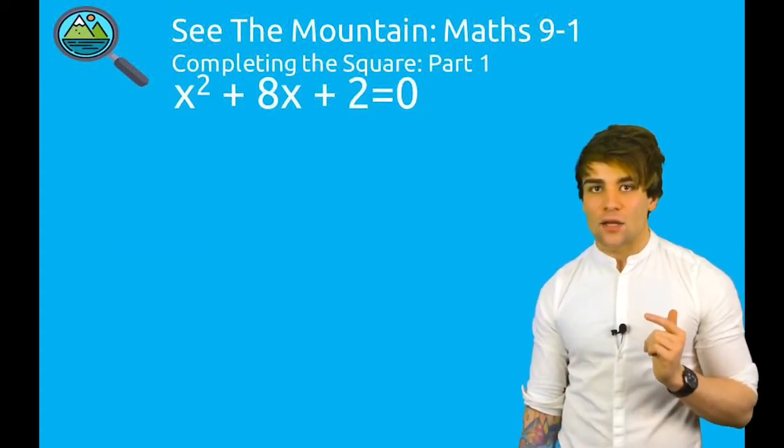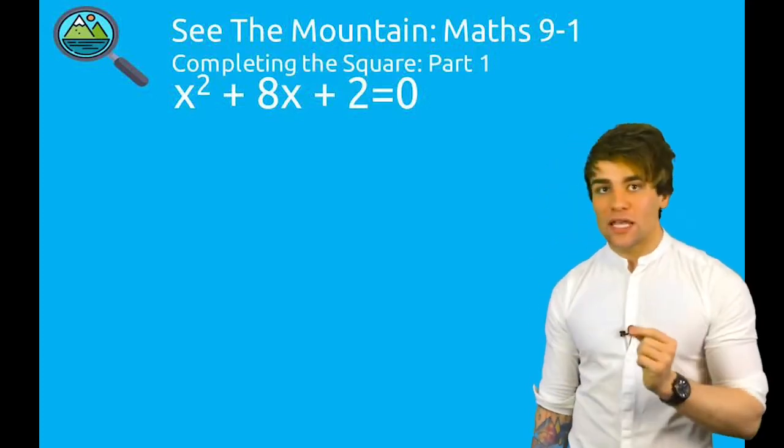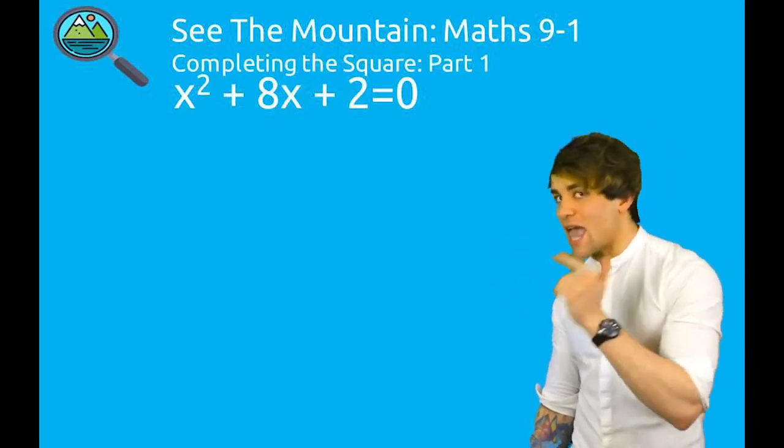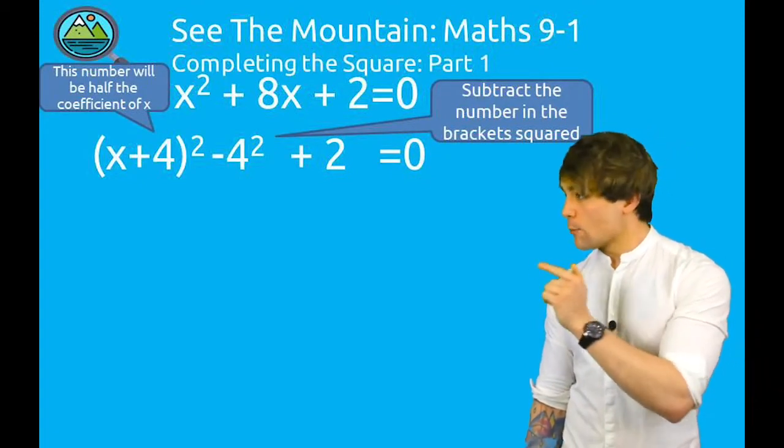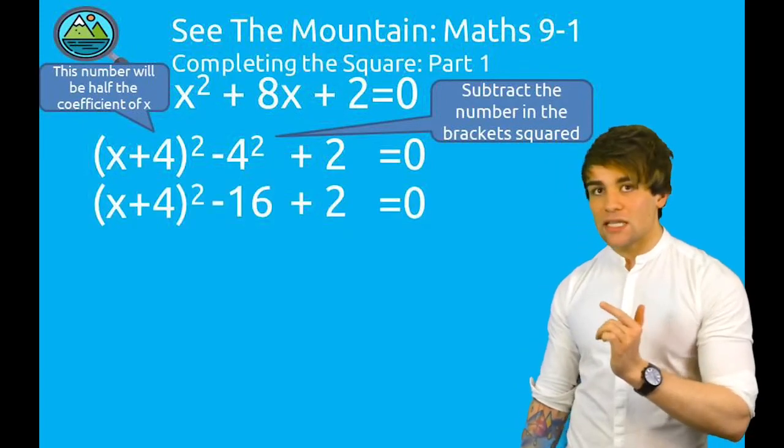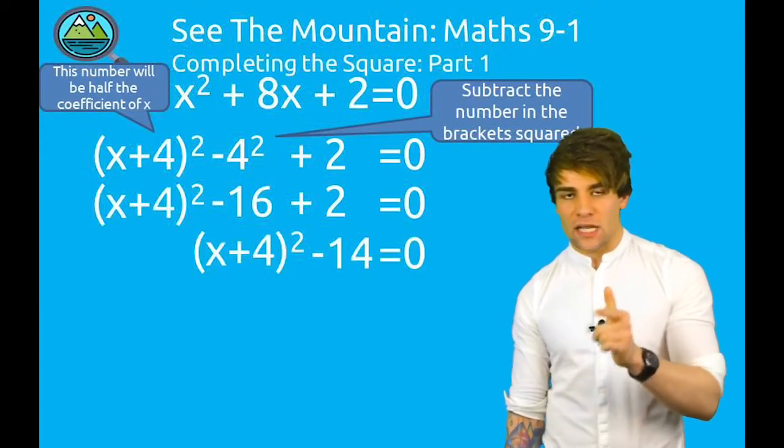We're going to follow that exact same method again. Let's take on x² + 8x + 2 = 0. Notice next to the x is the 8. In the brackets, (x + 4)² all squared. The 4 squared brings out a 16. We've got to take that away. So we have -16 + 2. (x + 4)² - 14 = 0.